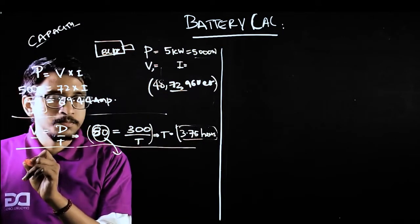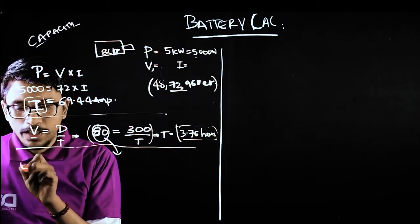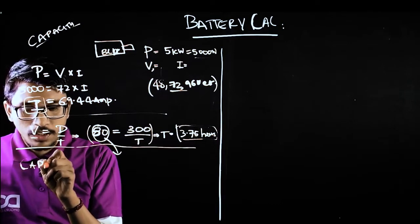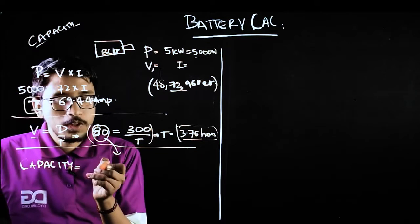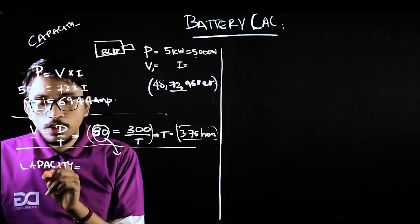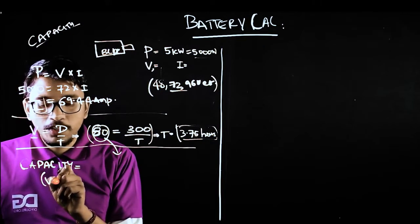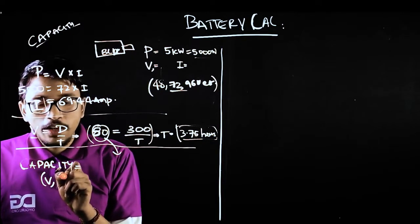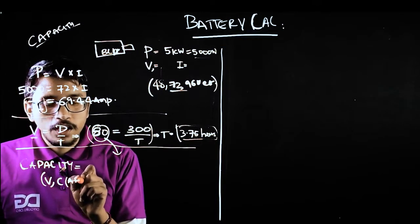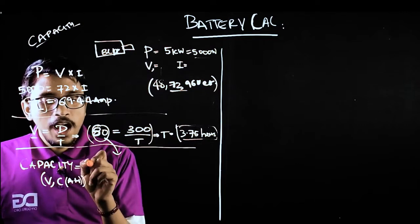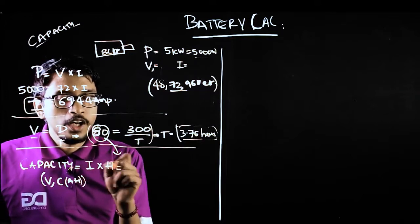I need to find the battery capacity. What are the two main parameters we need to judge while looking at batteries? We need to judge voltage and capacity. Capacity means ampere-hour. Ampere is the unit of current, hour is the unit of time.